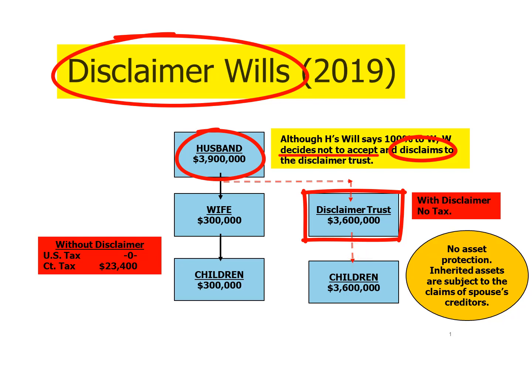The surviving spouse is entitled to all the income from the trust and to withdraw 5% annually. If she needs more, she must ask her trustee, whose job is to evaluate that request and ensure it's consistent with the terms of the trust. The wife disclaims the $3.6 million and it goes into what we call the disclaimer trust, while everything else passes outright to the surviving spouse.